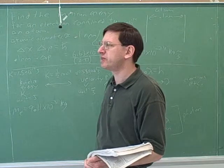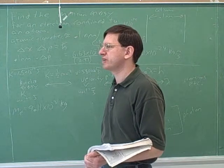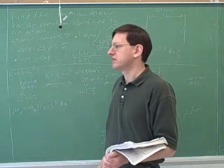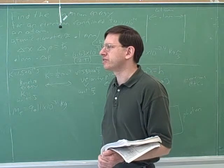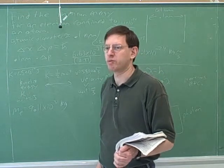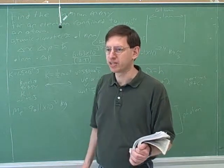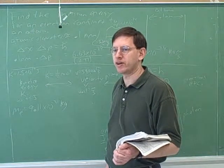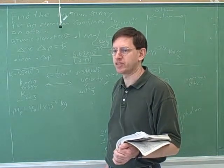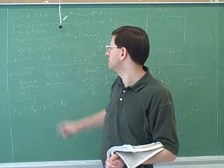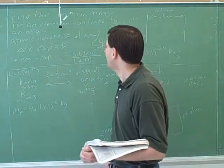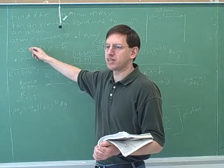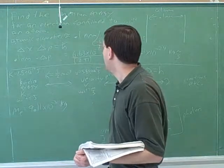The reason there is a minimum energy — remember — is the uncertainty principle. If something could have zero energy, then we could be exactly certain about its momentum and its position. So everything must always be moving at least a little bit, so we can be uncertain about where it is and what its momentum is. That was the clue that we need to use the uncertainty principle here. The atomic diameter gave us the uncertainty in x — that was the delta x.